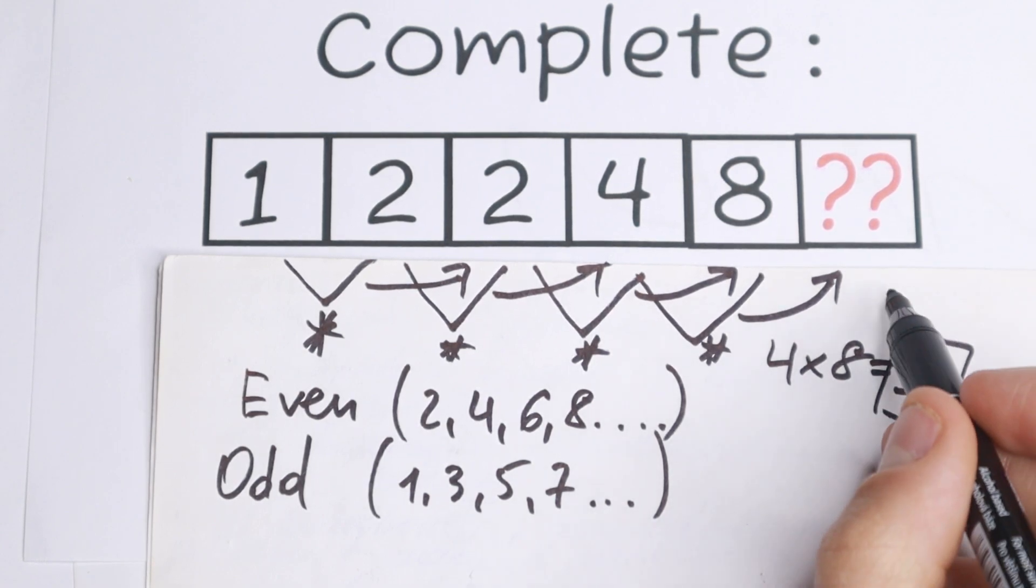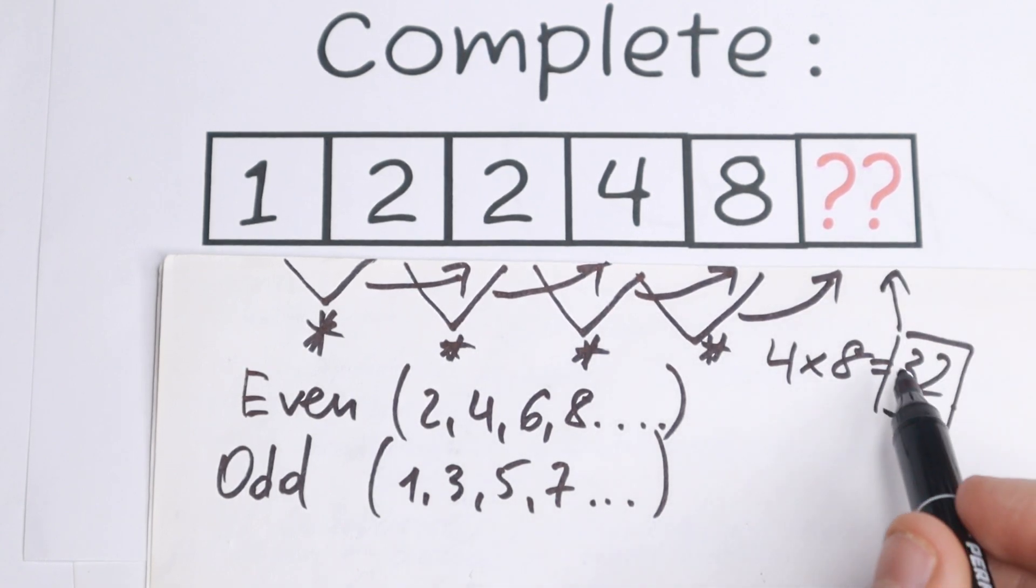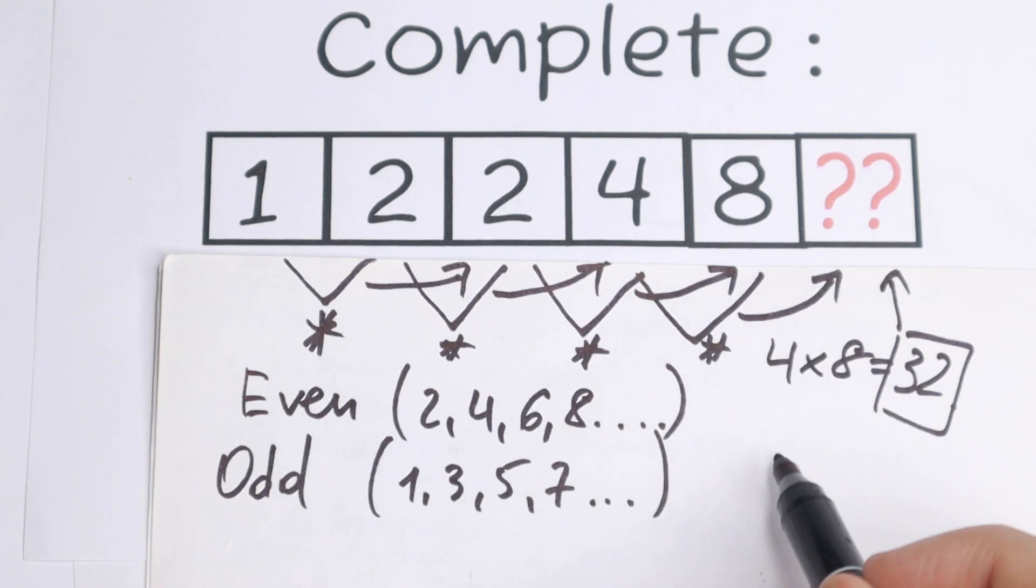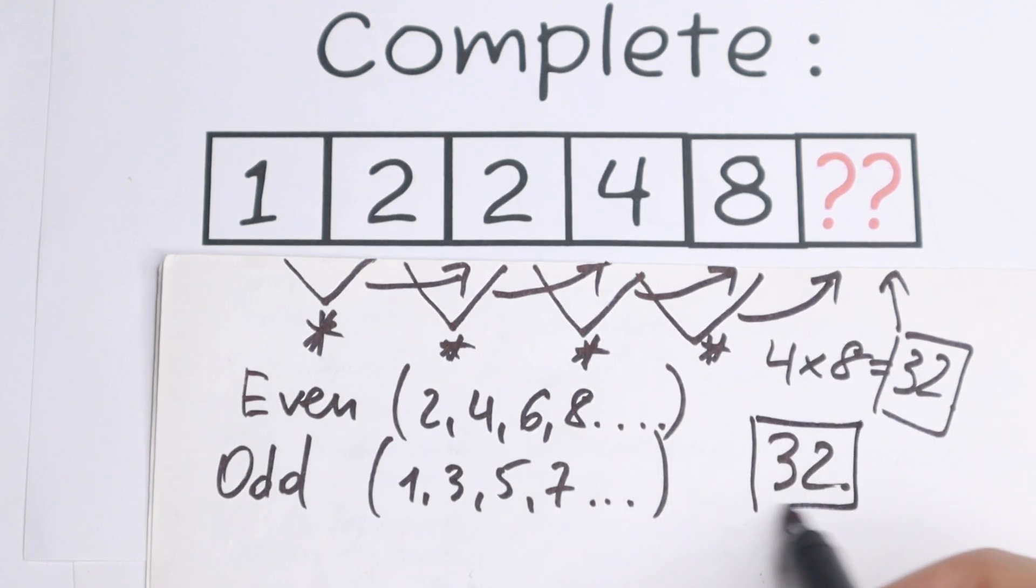And if you're looking at the options, we have 32. So my answer is 32, option A. What about you?